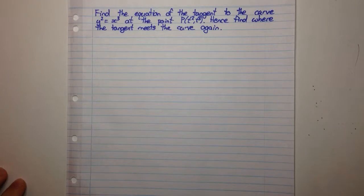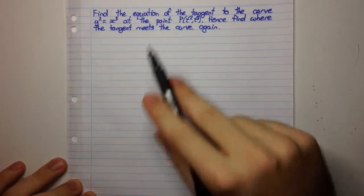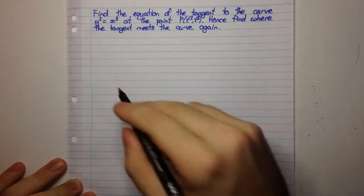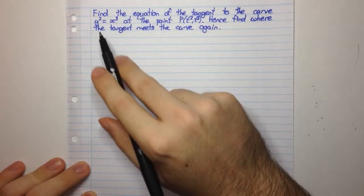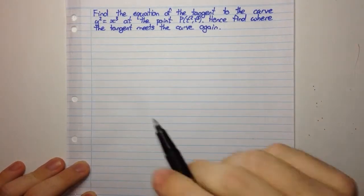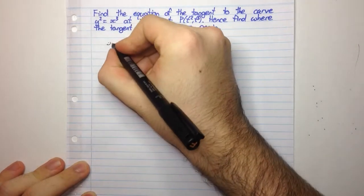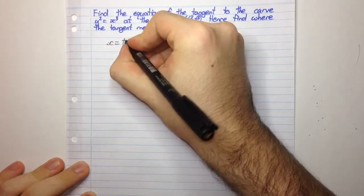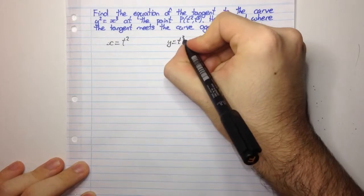Firstly we need to find the equation of the tangent, so we need to get the derivative at this point — we need to work out what the gradient is, which is the derivative. There are two ways you can do it. You can differentiate directly, but I'll show you another way using parametric equations. We have x equals t squared and y equals t cubed.